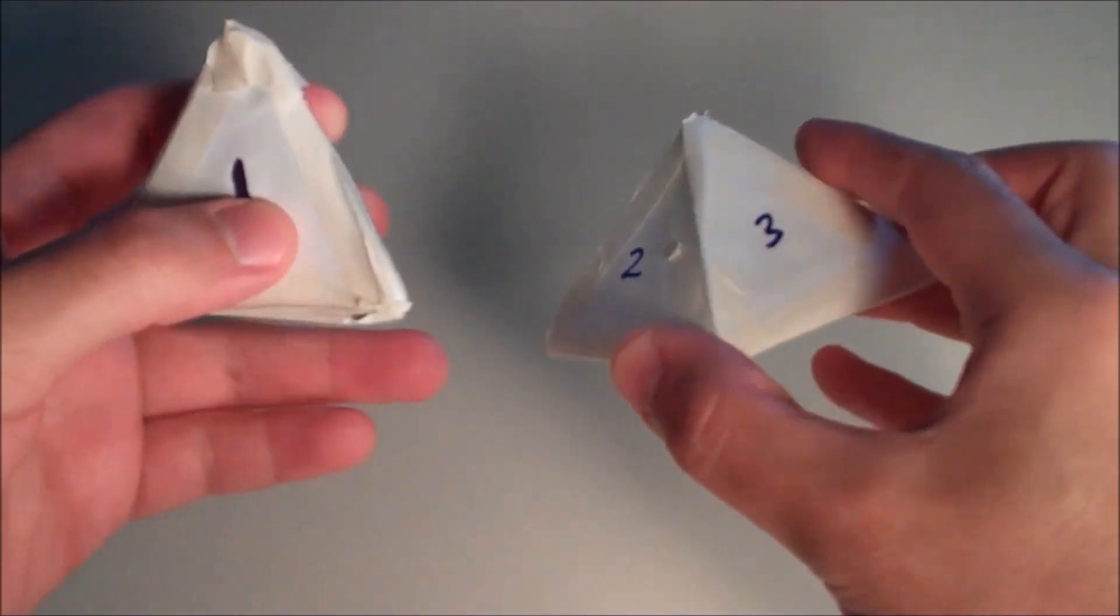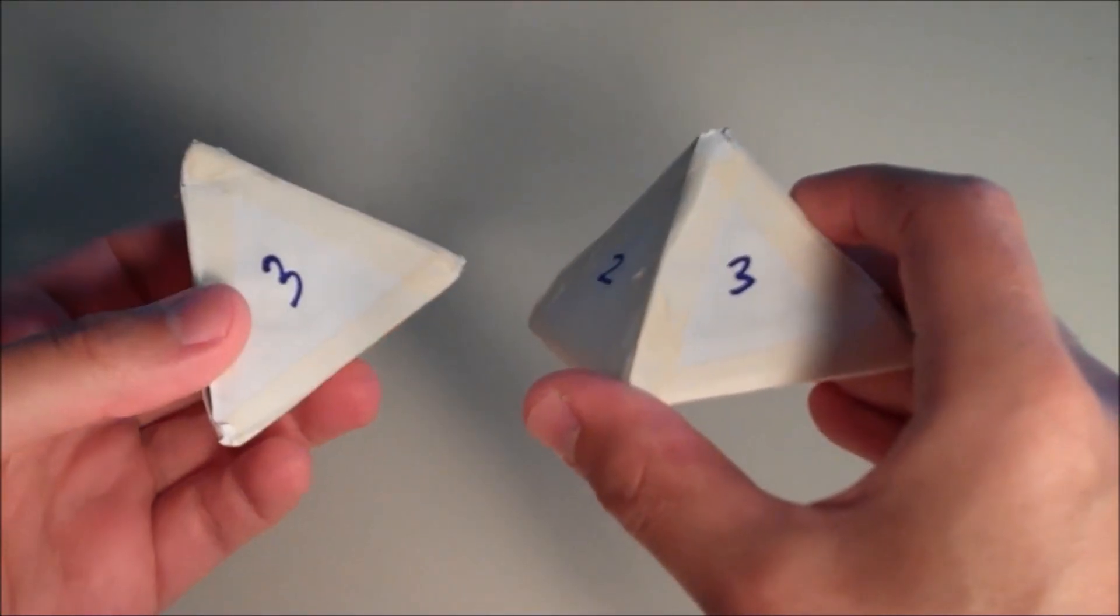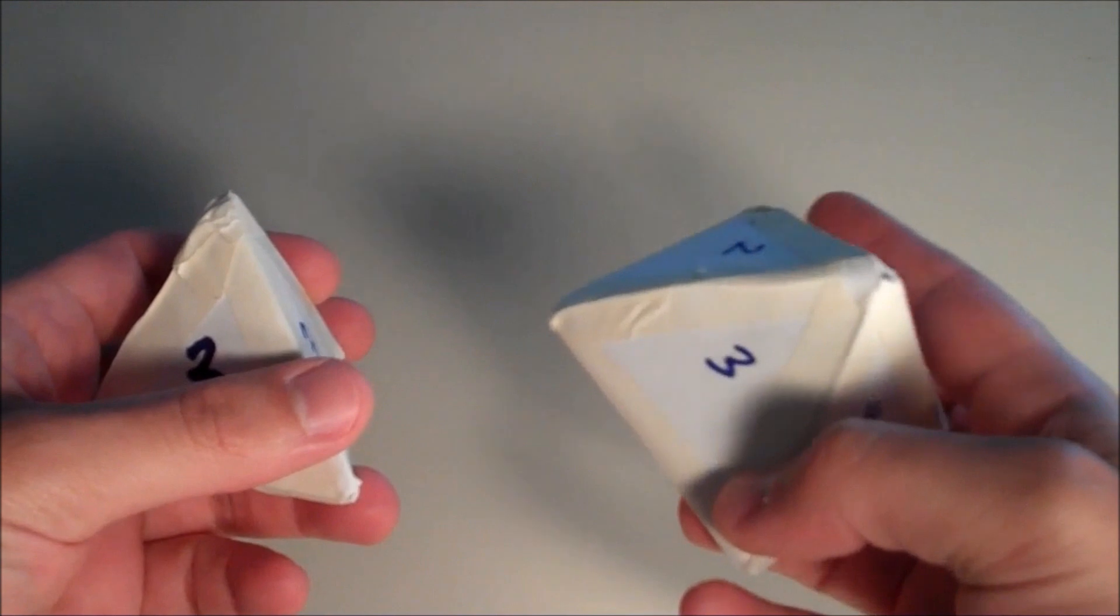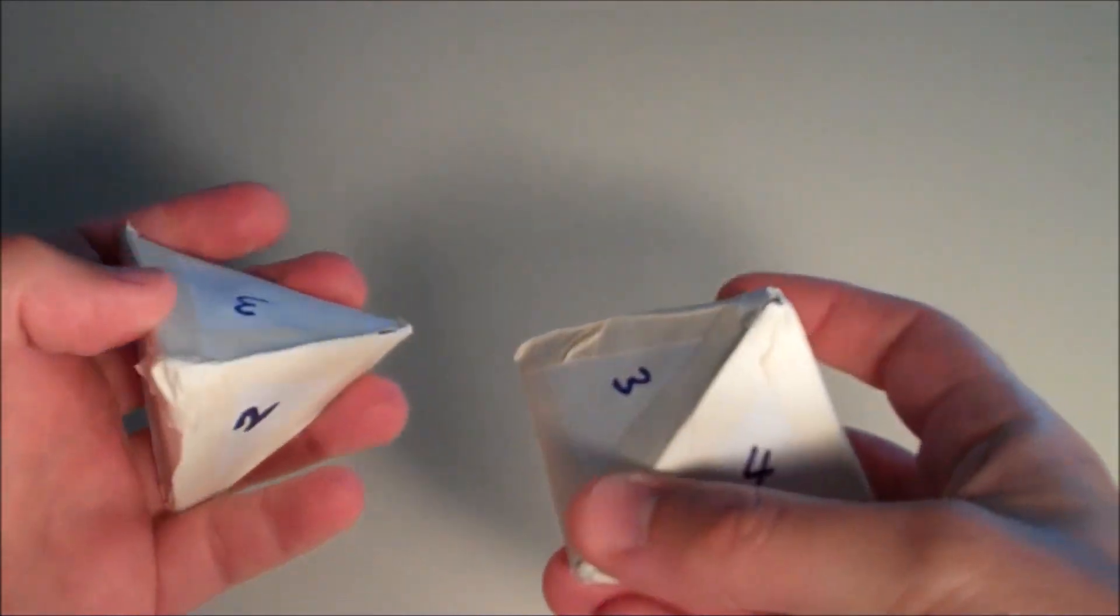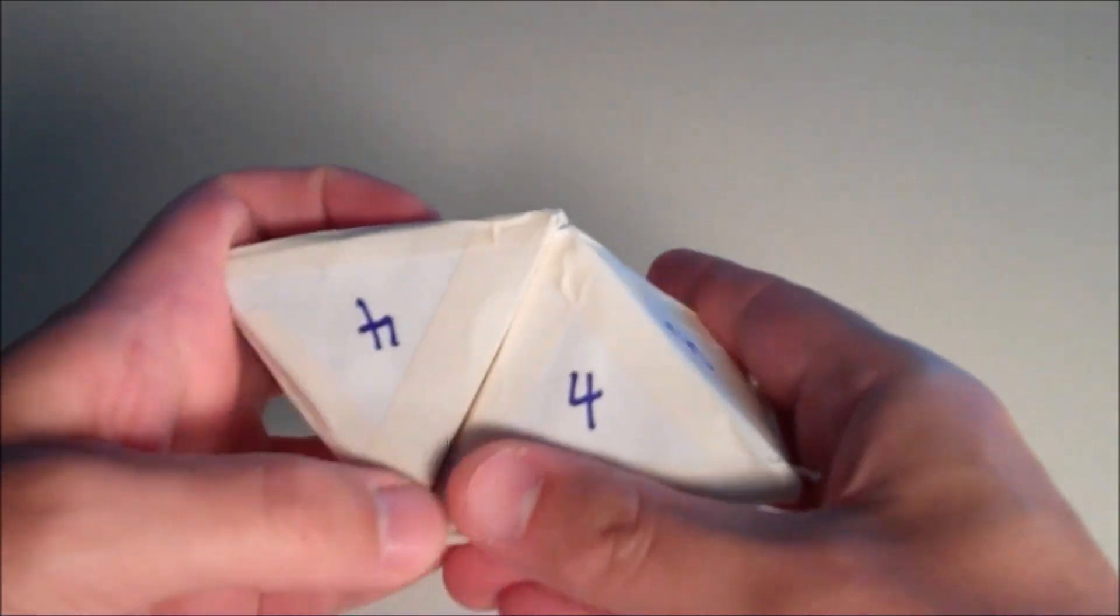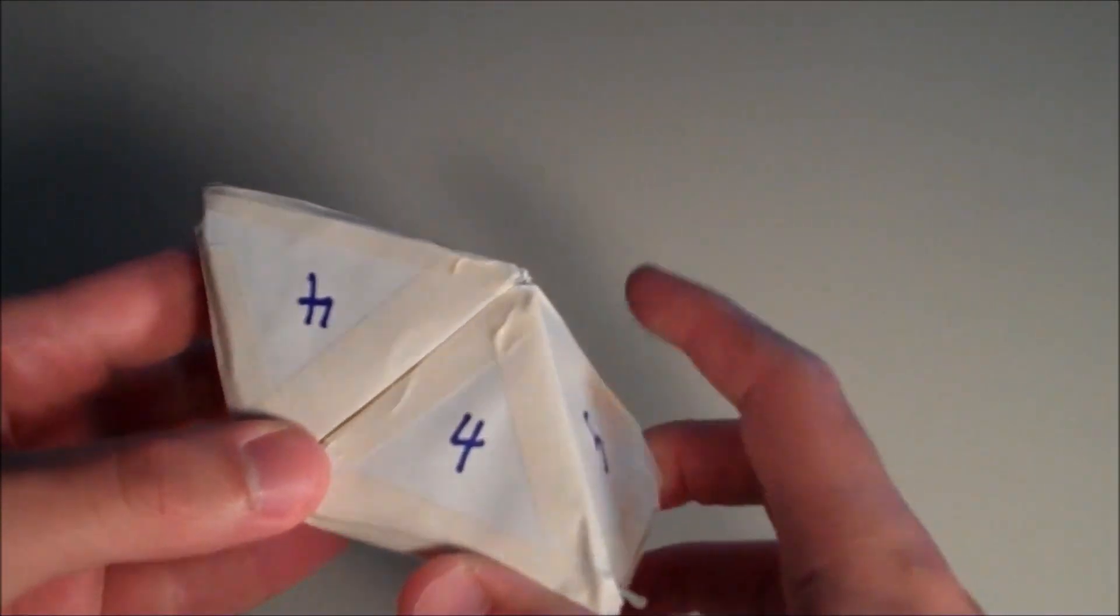I'm going to imagine attaching these two shapes. I'm going to take the two faces, which are number 3, and put them together. So let me orient the faces, and let me put these two faces together. When I do that,